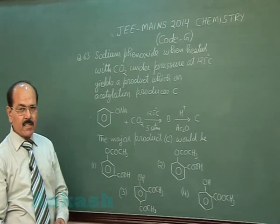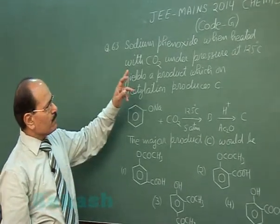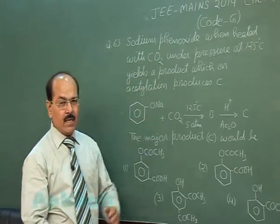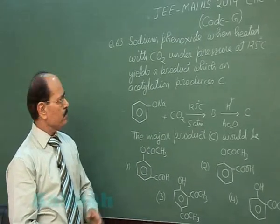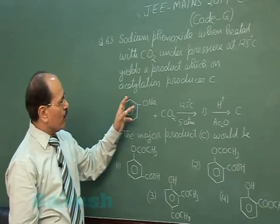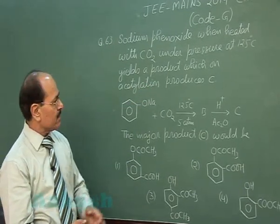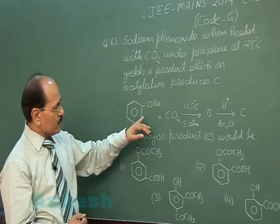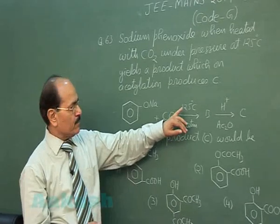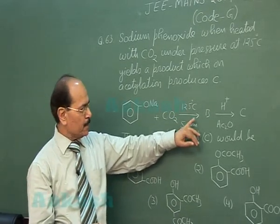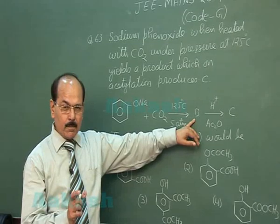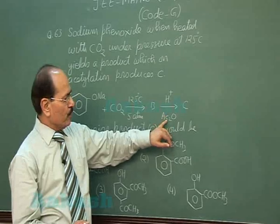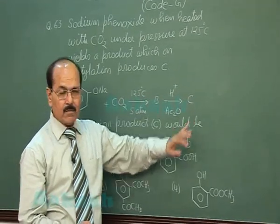Question 63 states that sodium phenoxide, when heated with carbon dioxide under pressure at 125 degrees Celsius, yields a product which on acetylation produces product C. Sodium phenoxide reacts with carbon dioxide at 125 degrees Celsius at 5 atmosphere pressure to yield product B. Product B then reacts with acid followed by reaction with acetic anhydride to give product C.